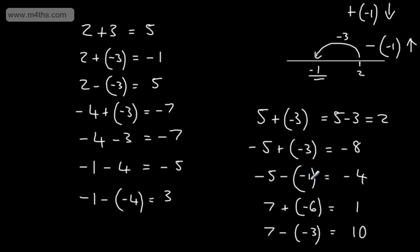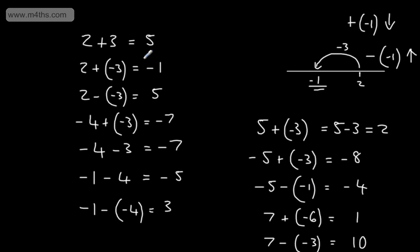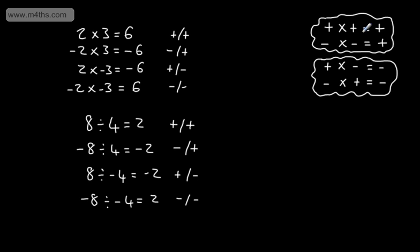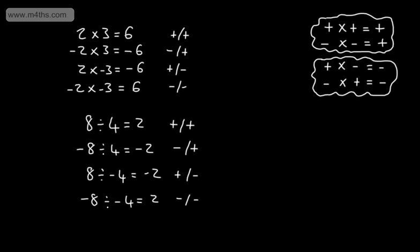So these are the rules we play by. With multiplication and division, if the signs are the same we get a positive number; if the signs are different we get a negative number. With addition and subtraction, if we're adding a negative number it will decrease the value; if we're subtracting a negative number it will increase the value.